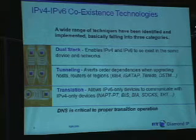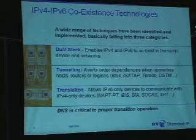In terms of coexistence, depending on your strategy and your existing IPv4 network, coexistence technologies fall into three main categories. First, dual stack — many operating systems support this natively today, including Microsoft XP, Vista, Solaris, and Linux, which support both IPv4 and IPv6 addressing. Dual stack is probably the most straightforward approach.